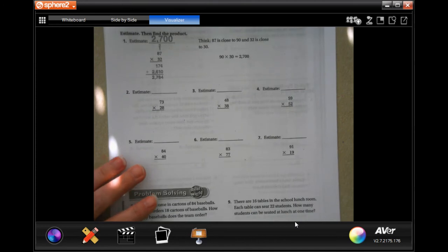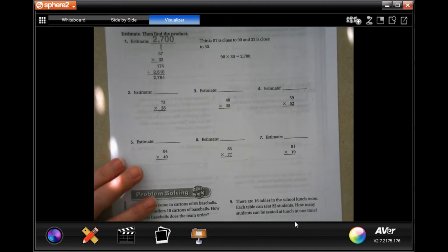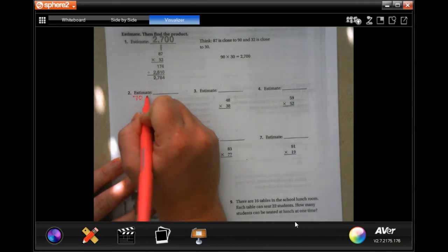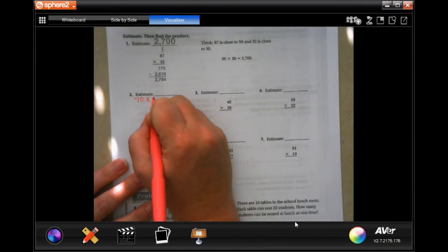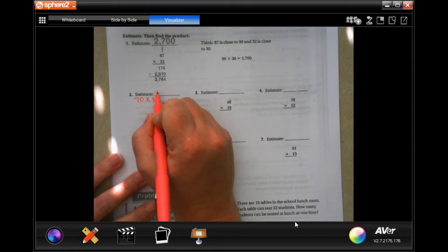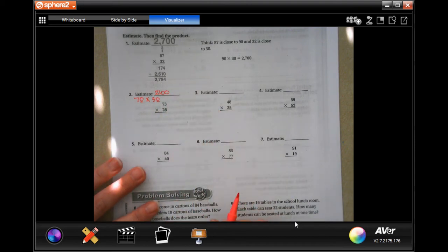We're going to go ahead and get started with number 2. So all I want us to do is first estimate, which is super easy. 73 would round to 70, and 28 would round to 30. So your estimate would be 3 times 7 is 21, and then add on those two zeros. So that's our estimate.